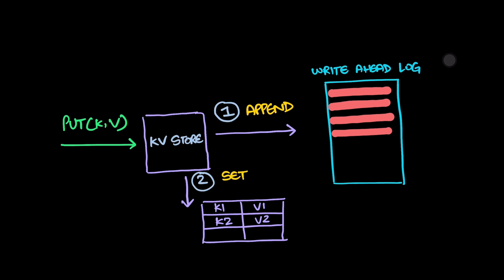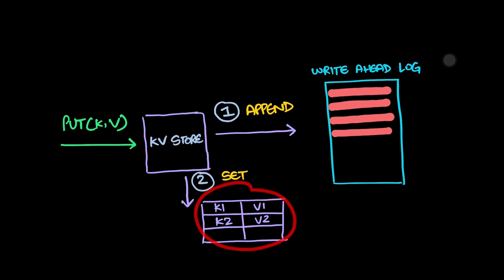When a system such as a database initiates a write operation, it first records this operation in the WAL prior to updating any on-disk structures. This step is key to ensuring that the operation can be recovered, even if the system crashes before the write is fully completed.